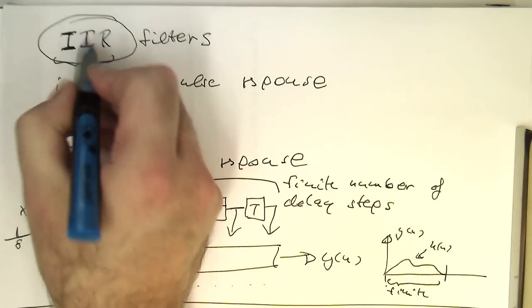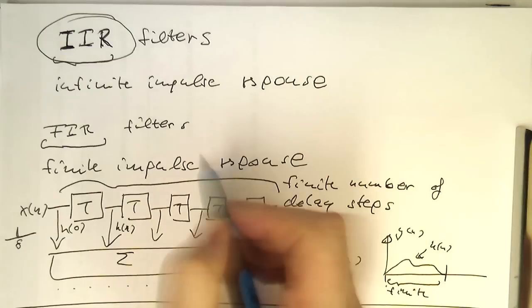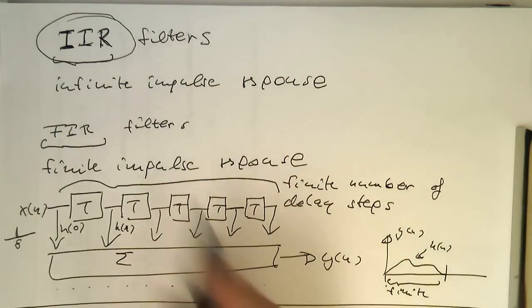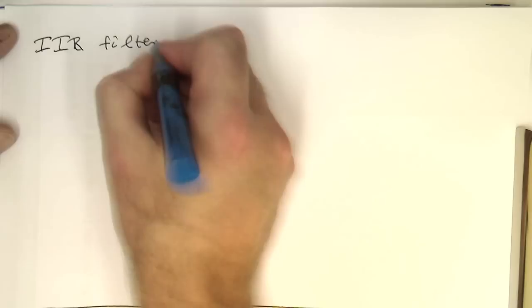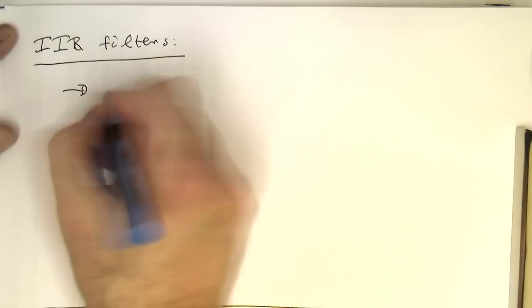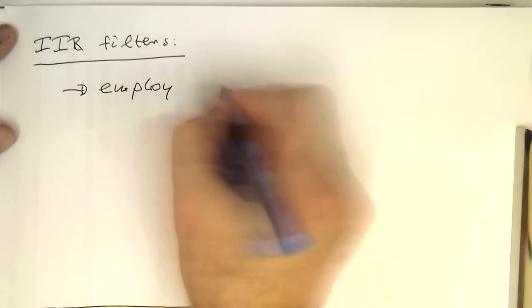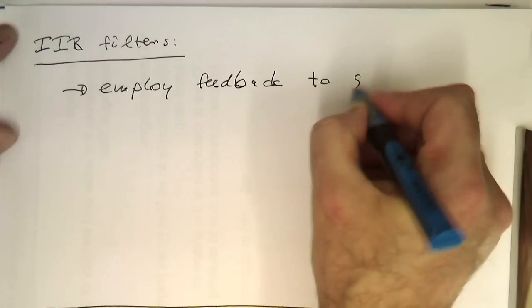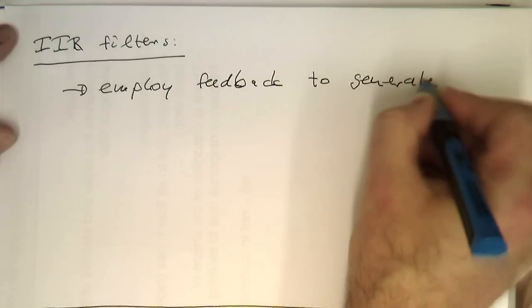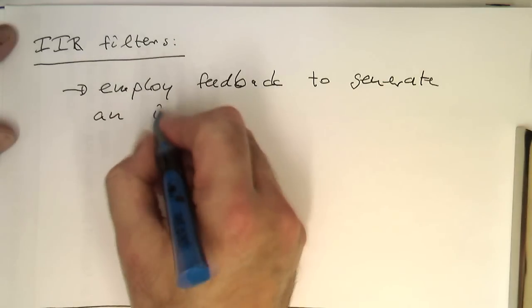So how do we generate filters with infinite impulse response? The idea is that IIR filters have feedback, and with feedback we're generating an impulse response which lasts in theory forever. IIR filters employ feedback to generate an impulse response.